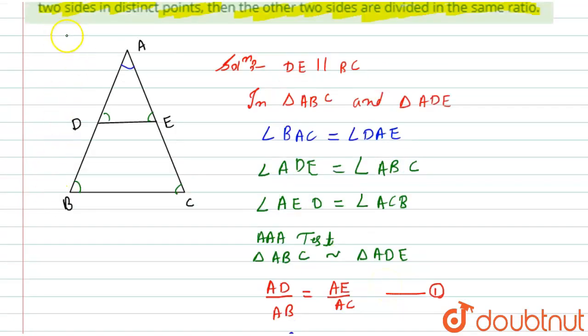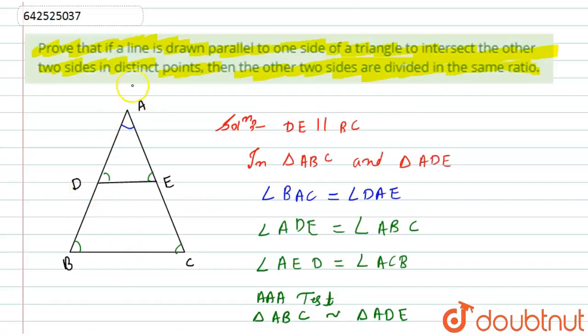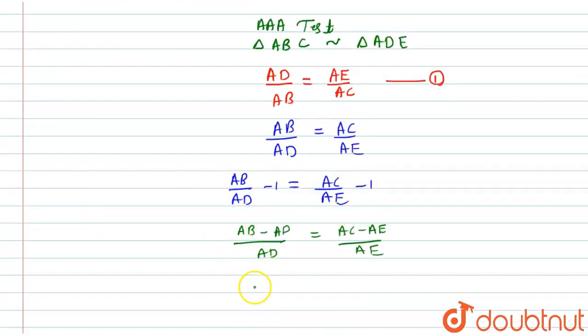Now if I look at the figure, what is AB minus AD? AB minus AD is nothing but equal to BD. So here I will write BD divided by AD.